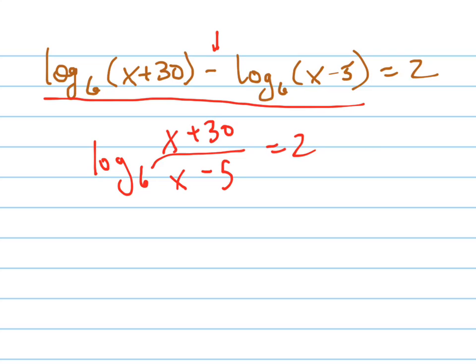Now I'm going to use the equivalence to rewrite this logarithm as an exponential. So it's 6 squared equals (x plus 30) all over (x minus 5). 6 squared is 36, so let me just get rid of that to save some room.